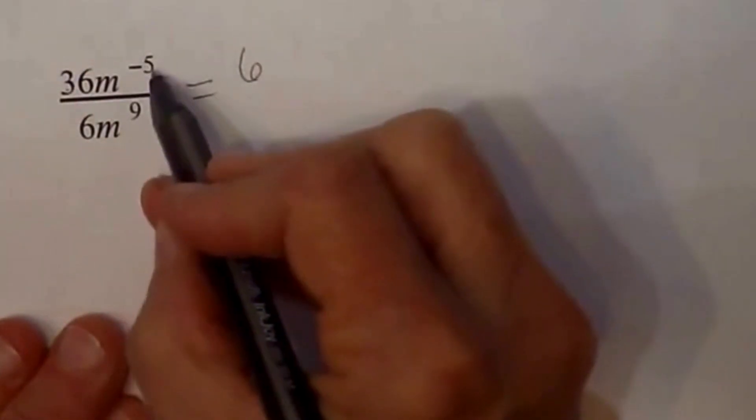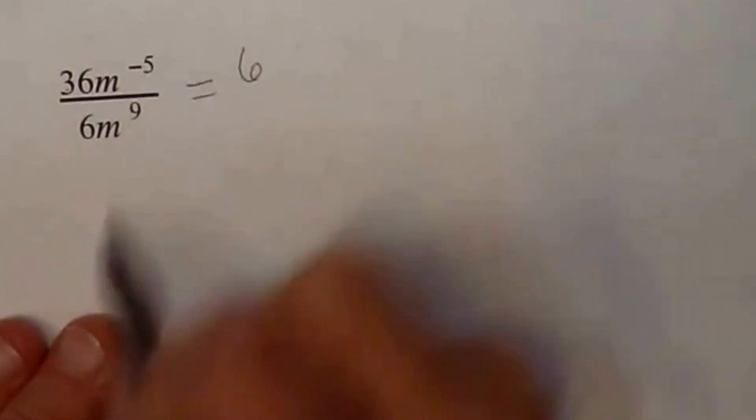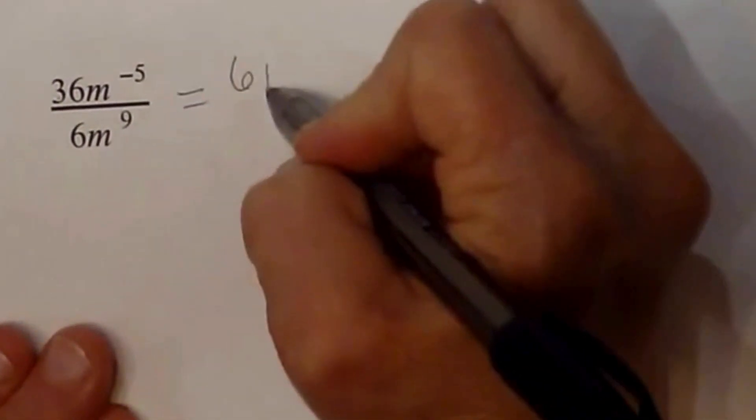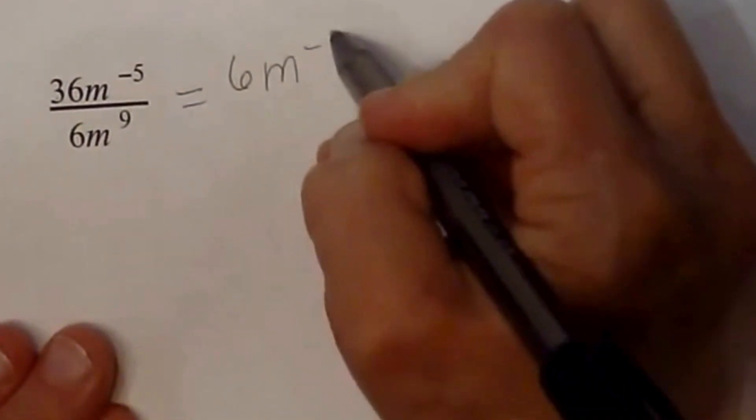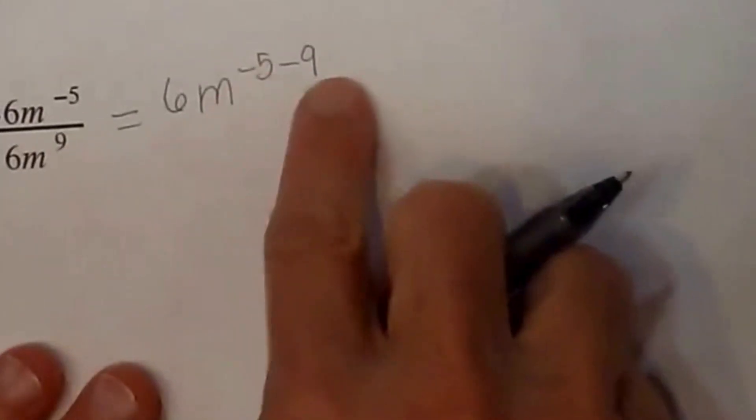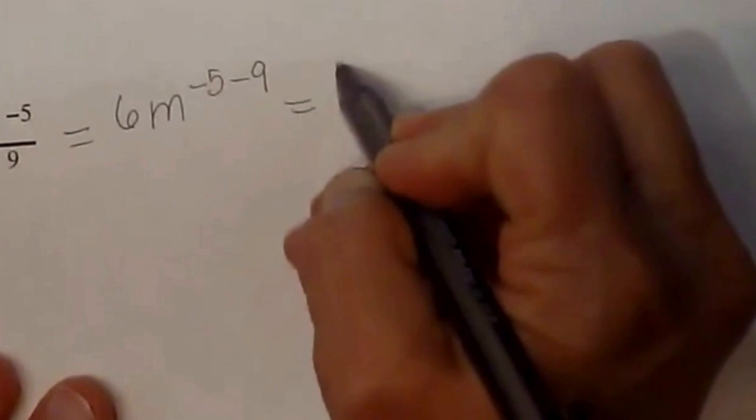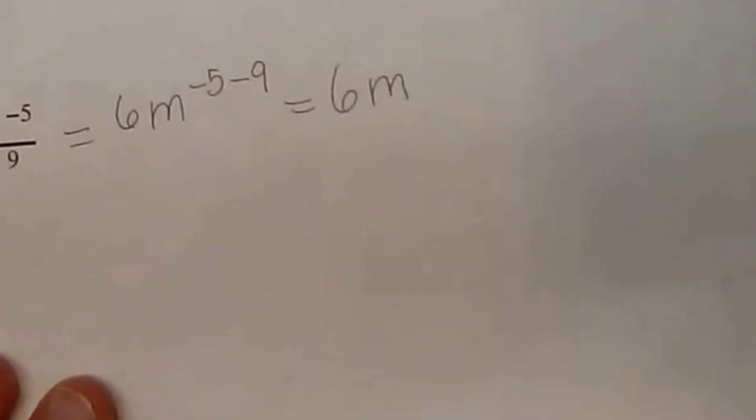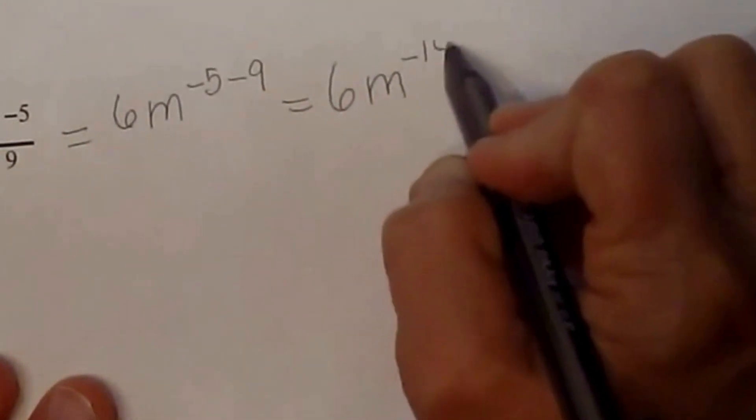And then the coefficients, this time since we're dividing, we're going to subtract our exponents. So we have m to the negative 5th minus the 9. So now let's subtract these exponents. That gives us 6 times m to the negative 14th.